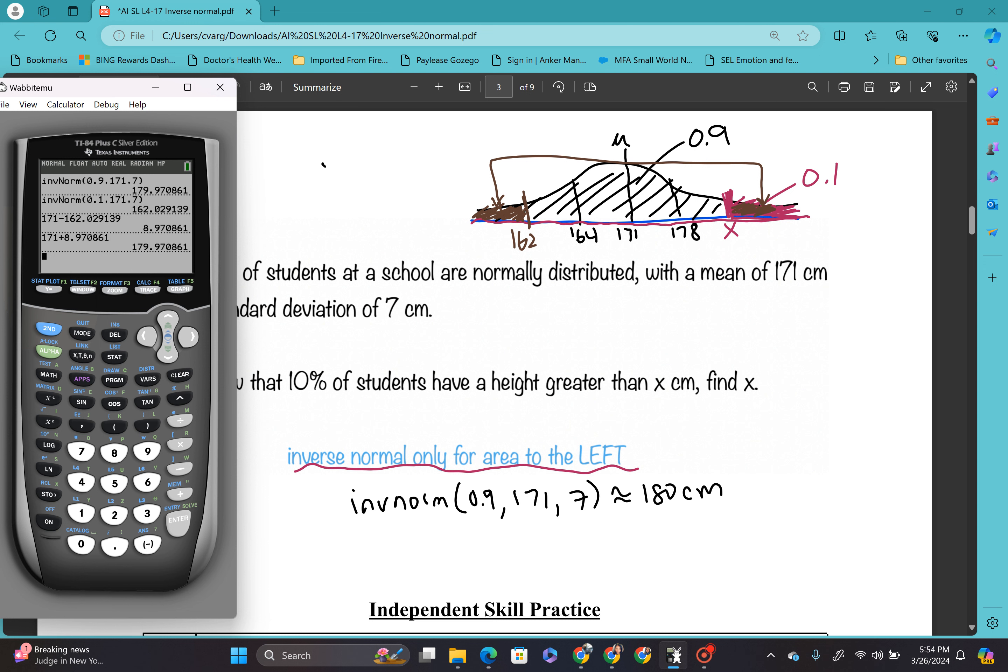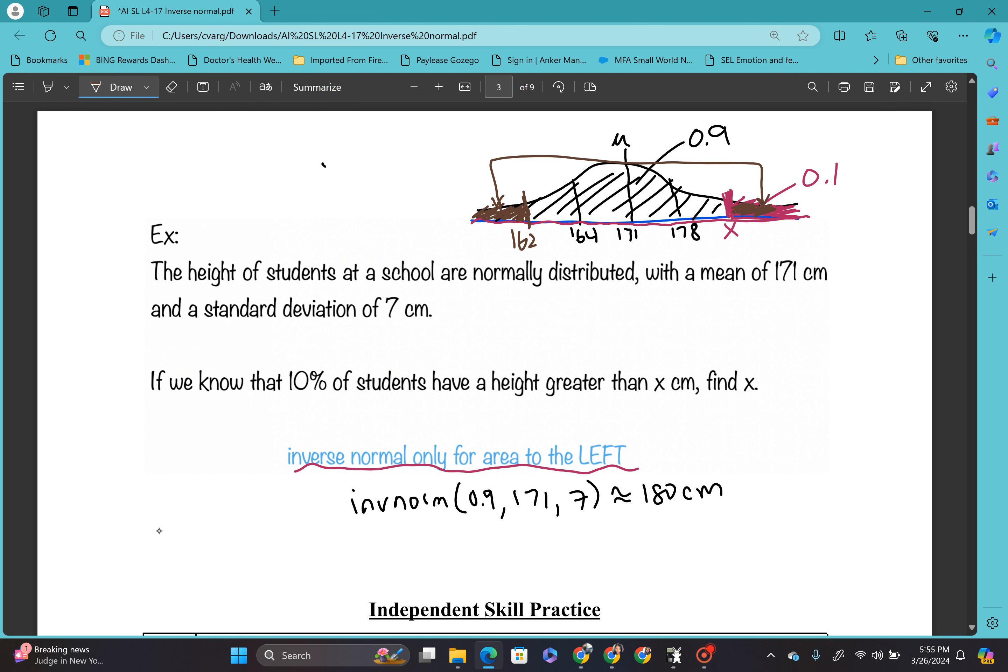So if you did the wrong thing and you got 162, you should have been able to see, okay, hey, my mean is over here. So 162 is on this side. I want to know what this value is right here. So this we just found out is 180 centimeters. That's where our x value is.